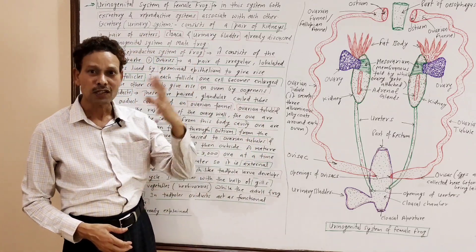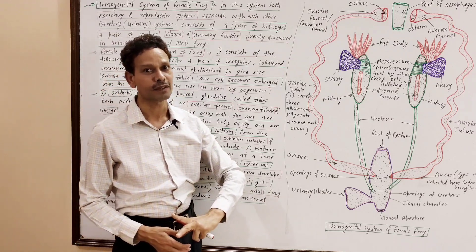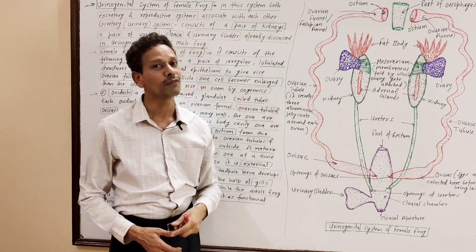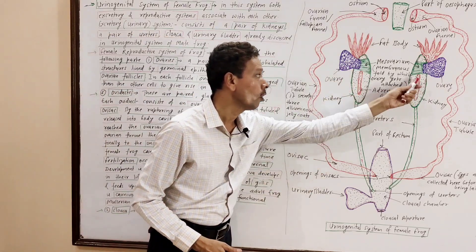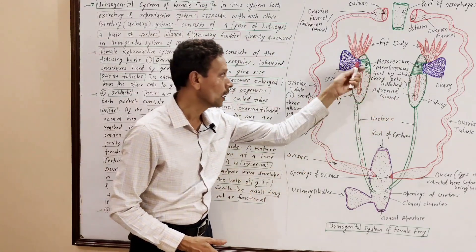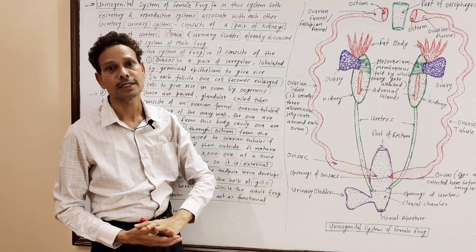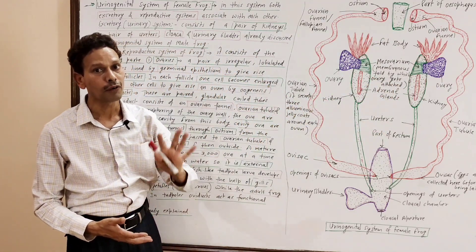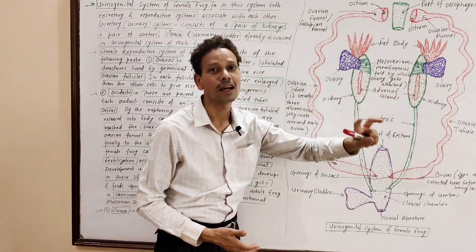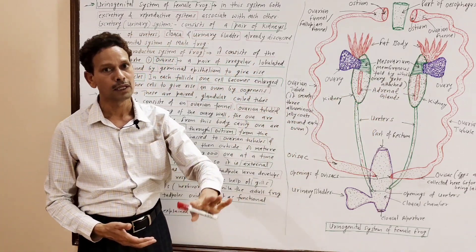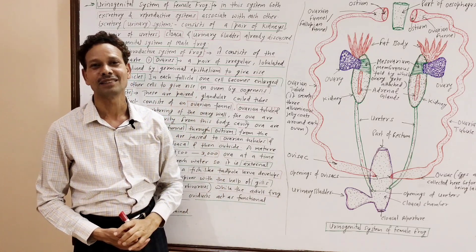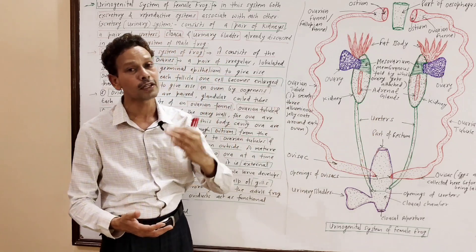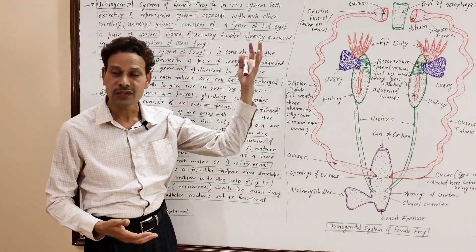As in the case of male frog, we discussed the excretory system. Similarly, in the case of female frog, the excretory system consists of the following parts: a pair of kidneys — these are elongated, dark red structures involved in the formation of urine. In each kidney, about 2,000 structural and functional units called nephrons or urinary tubules are present, as discussed in our last lecture.